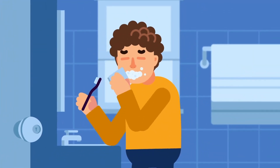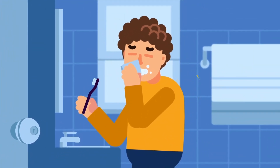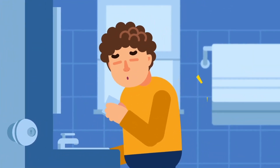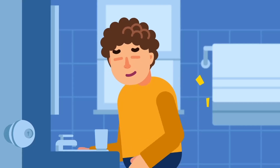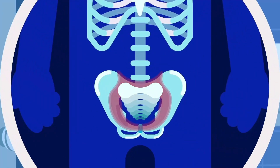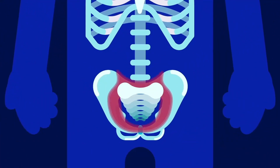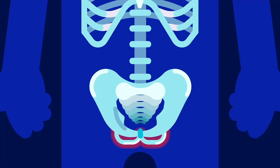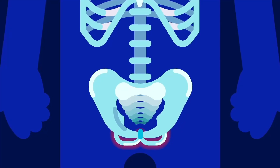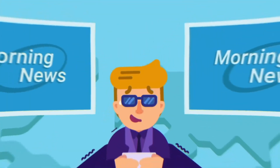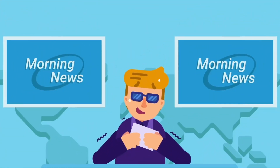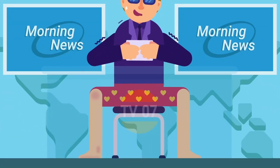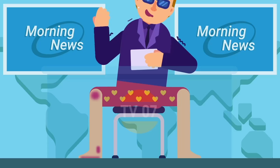Symptoms include stiffness and pain in your lower back in the early morning, which eases through the day or with activity. Pain in the joints where the base of your spine meets your pelvis. Tenderness at the base of your pelvis, which makes sitting uncomfortable. Some may also have pain, stiffness and swelling in their knees or ankles.